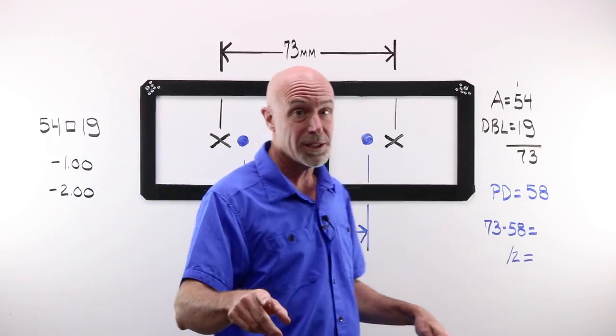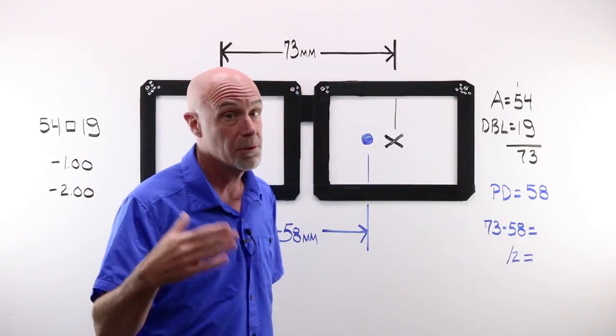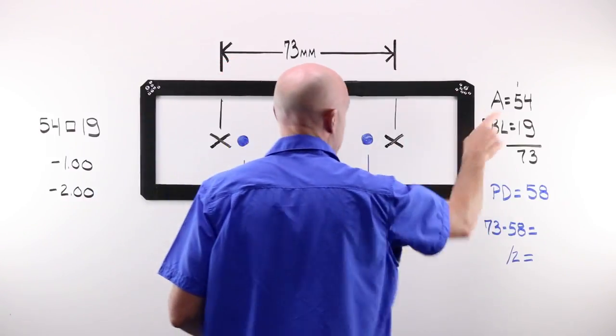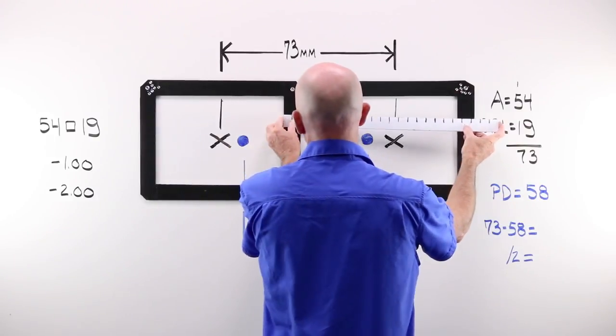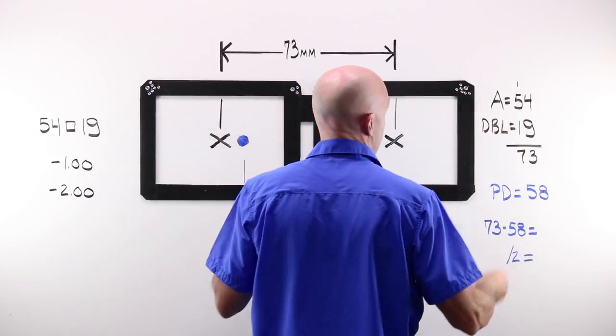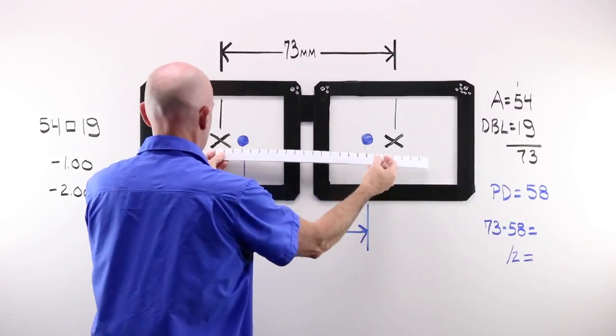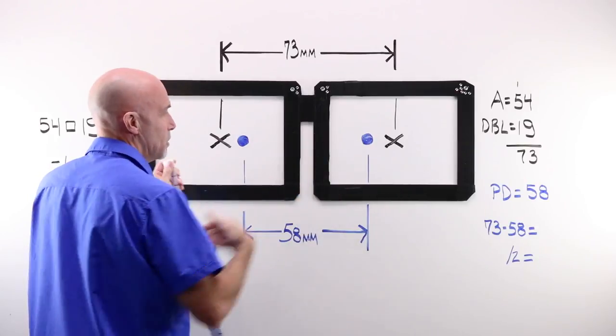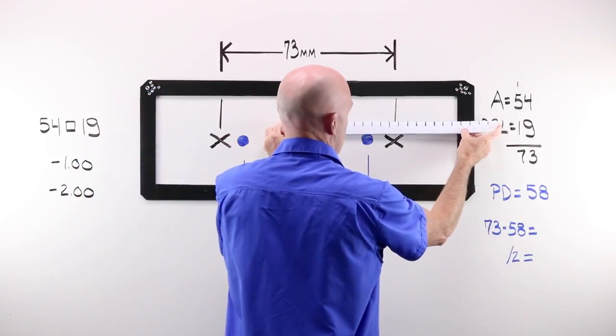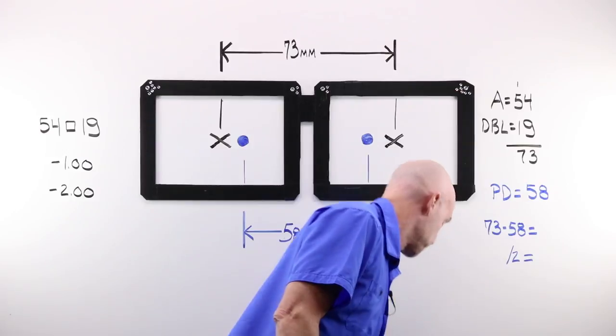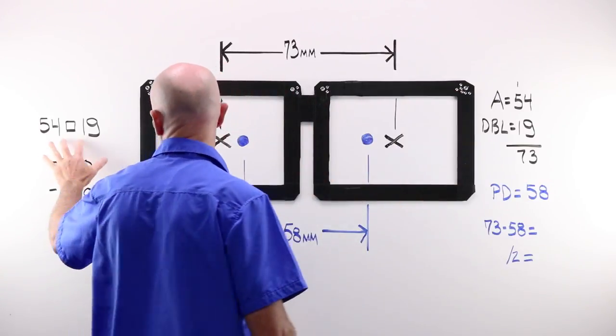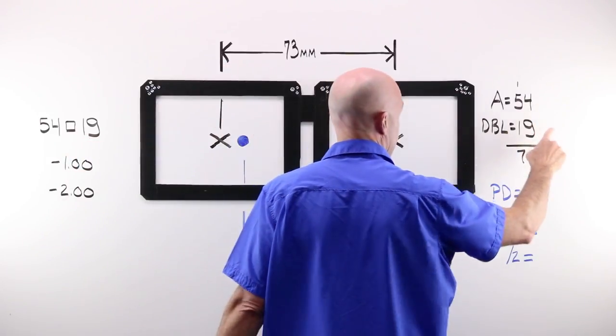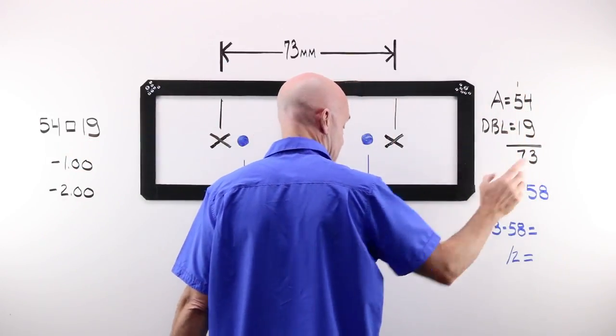How do I come up with my frame PD of 73? I'm not going to go into a whole lot of detail here. There is an excellent video on the boxing system, and of course there's tons of that stuff on the website. But the short answer is, if I add my frame A and my DBL, that matches the geometric center of the eye wire openings. This particular frame has a boxing frame measurement of 54-19. 54 added to 19 is 73.